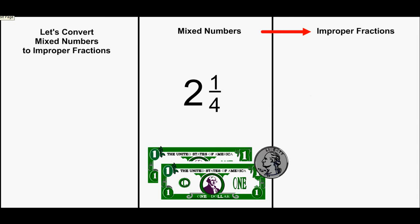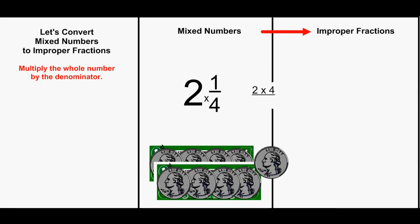Since each dollar can be represented as 4 quarters, I will do 2 times 4. Then, add the 1 quarter that was not part of the dollars, and I get a total of 9. 9 quarters.